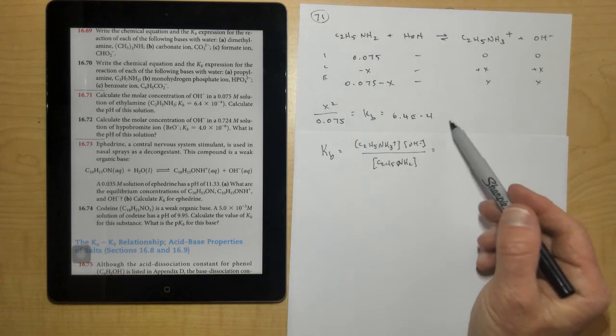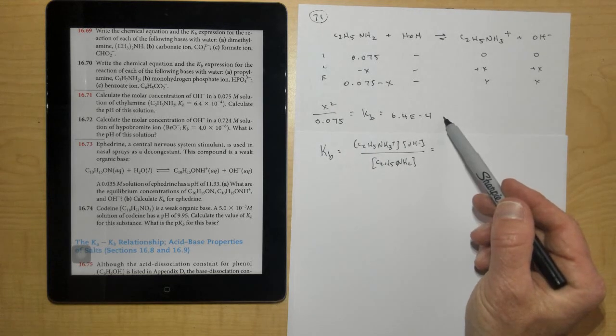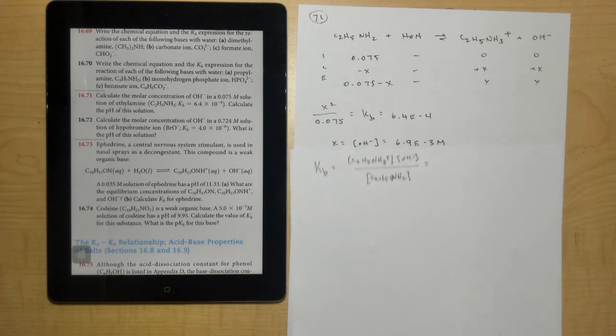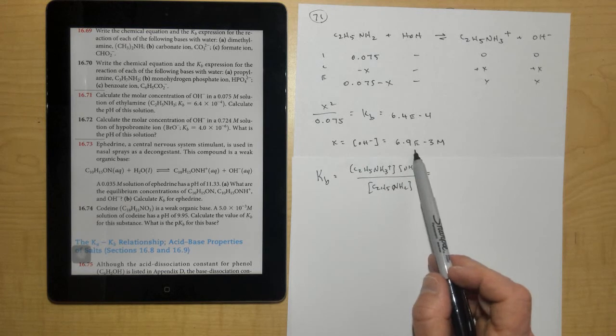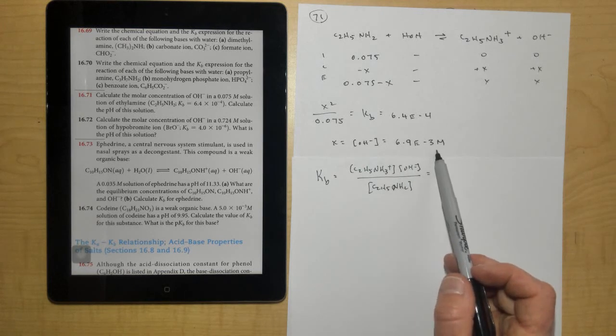Then we need to solve this for x by multiplying by 0.075 on both sides of the equation and taking the square root. And I end up with x, which is the OH minus ion concentration, equaling 6.9 times 10 to the negative 3rd.